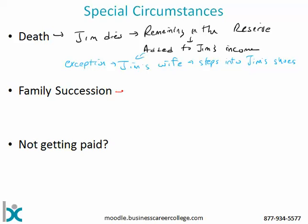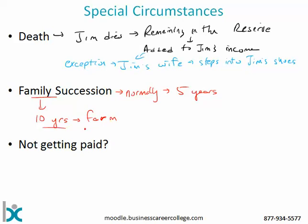Another special circumstance is with a family succession. Normally we have five years, but when you're selling to family, you can use 10 years. That's actually quite common in farm succession — the kids buy the farm and pay mom and dad out of the revenues generated by the farm over the next 10 years.